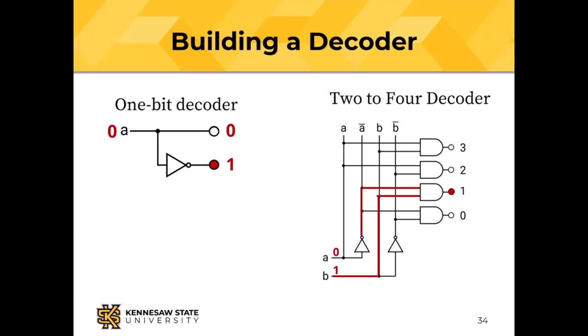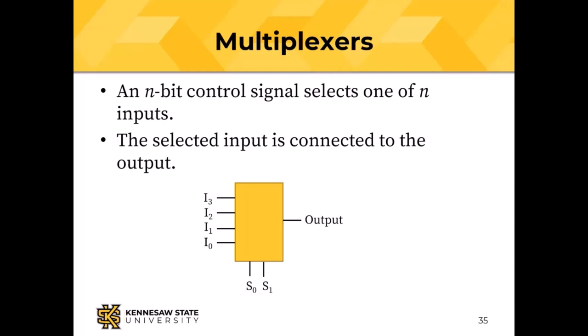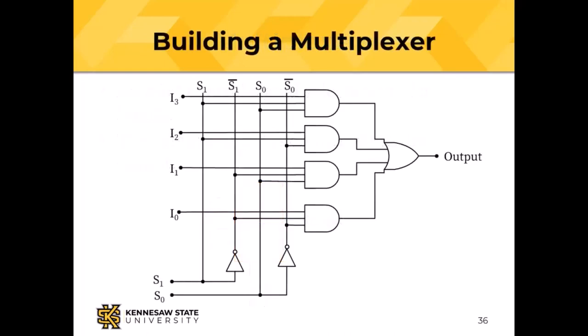Another building block is the multiplexer — kind of the reverse of a decoder (though technically the reverse is an encoder). A multiplexer takes an n-bit control signal and selects one of n inputs, connecting it to the output. If the control input is 0,1 then input 1 is connected to the output. The design uses NOT gates, AND gates, and OR gates — the same principle as sum of products.